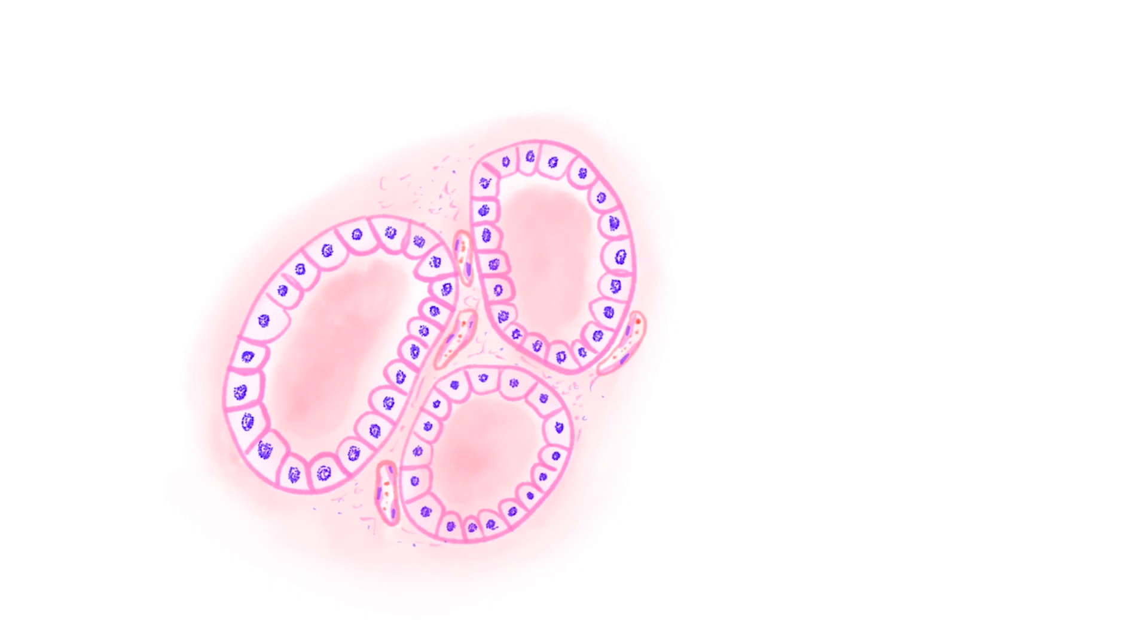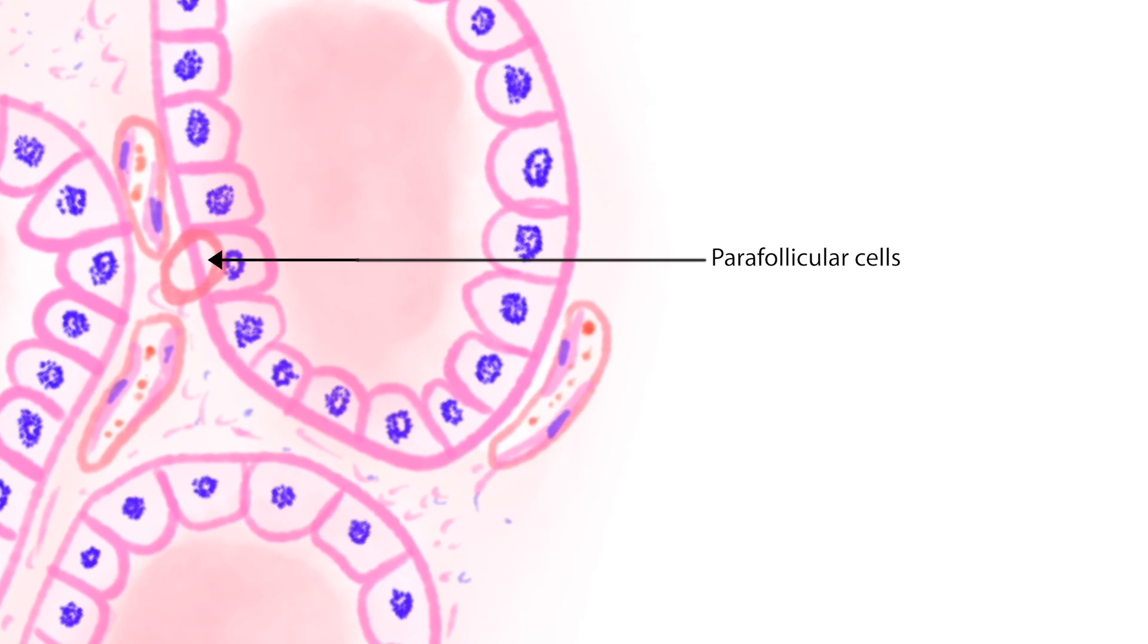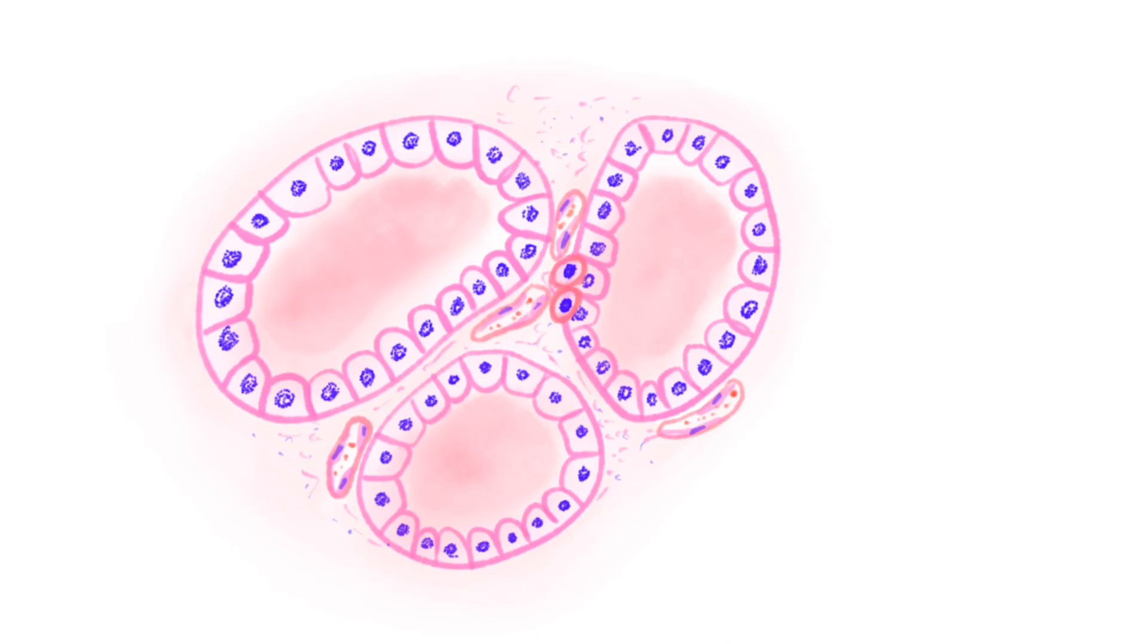Because we still need to draw the para follicular cells. You can see that in this diagram, the basement membrane on which the follicular cells are resting is not well visualized. But between the follicular cells and the underlying basement membrane, we can draw two light staining cells. Remember they are very light staining. And then the nuclei. And there you have your para follicular cells in place as well.